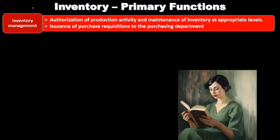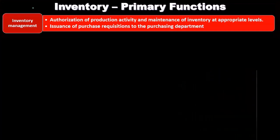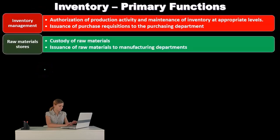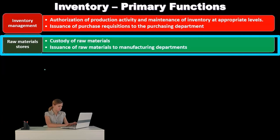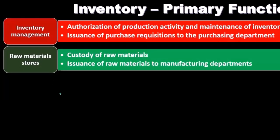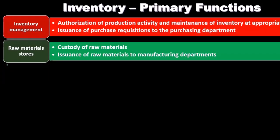Now we'll look at the primary functions related to inventory. First, inventory management involves the authorization of production activity, maintenance of inventory at appropriate levels, and issuance of purchase requisitions to the purchasing department. Then raw materials stores involves the custody of raw materials and issuance of raw materials to the manufacturing department. As we go through these functions, we want to consider the inherent risks, what internal controls might be in place, how to test those controls as the auditor, and the substantive procedures related to them.